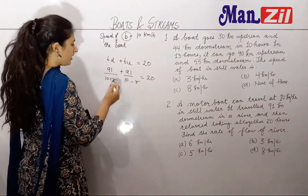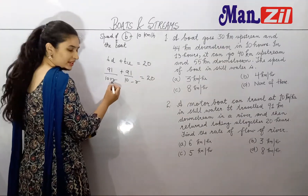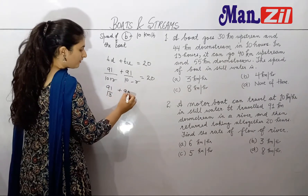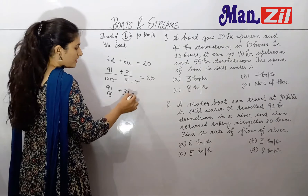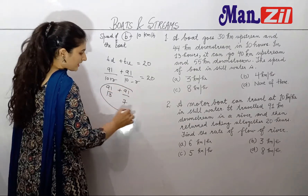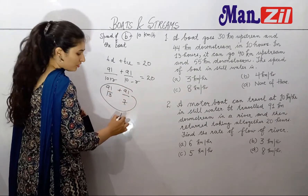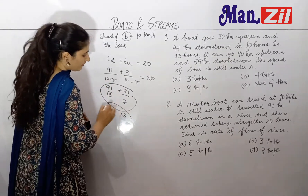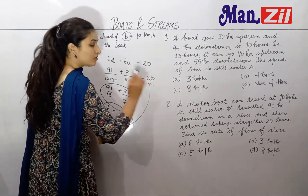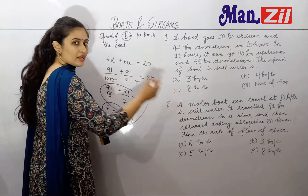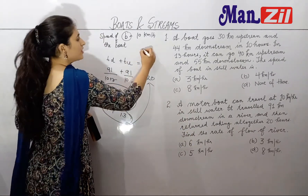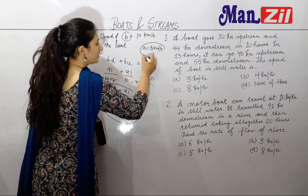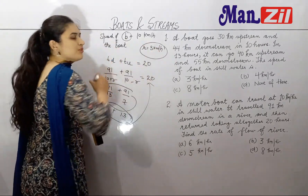Next, try R equals 3. If I put 3 here: 10 plus 3 is 13, and 91 divided by 13 is 7. And 10 minus 3 is 7, so 91 divided by 7 is 13. So 7 hours plus 13 hours gives 20 hours. So 3 km per hour satisfies the equation. Our speed of the river is 3 km per hour.